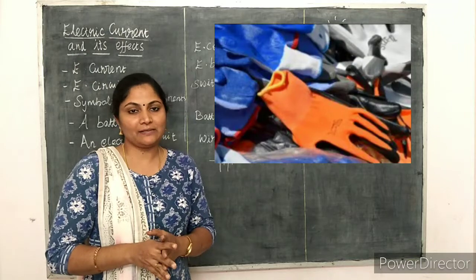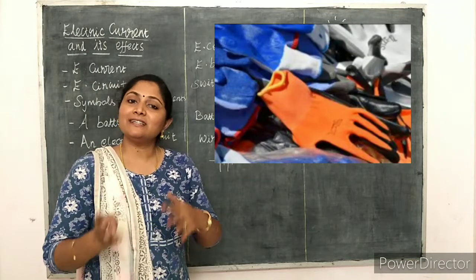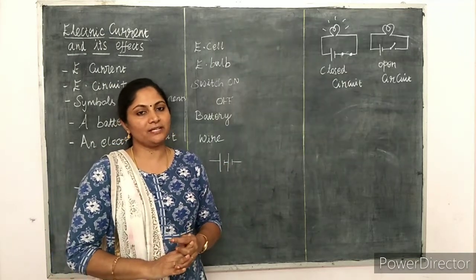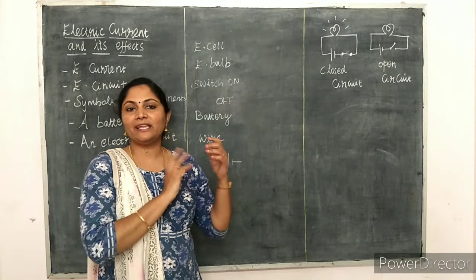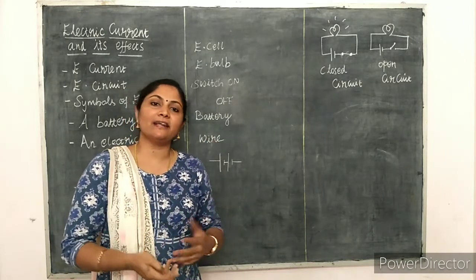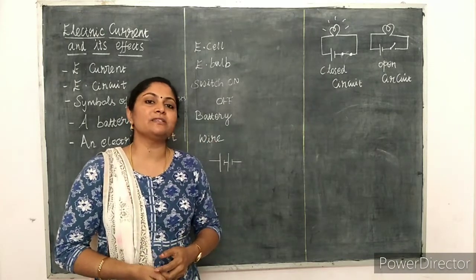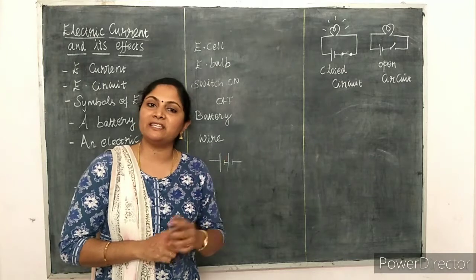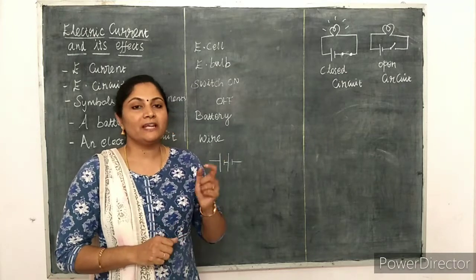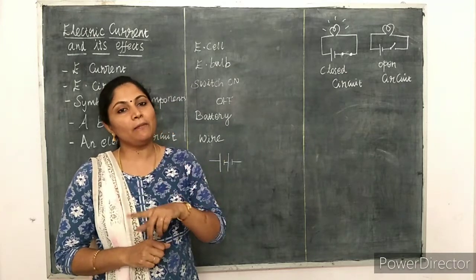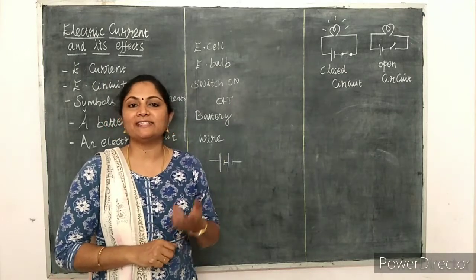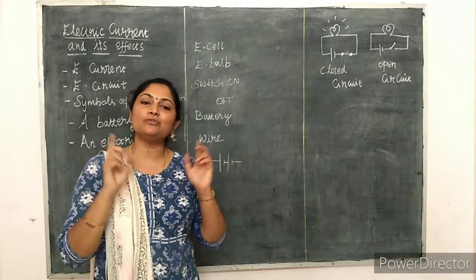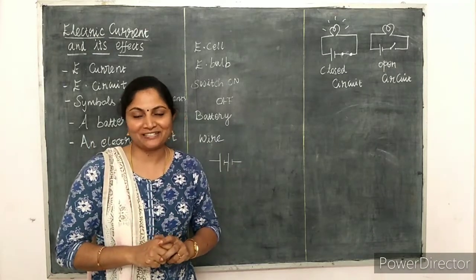An insulator is a material which does not allow the electric current to pass through it. In electric circuits, we are going to discuss about only conducting materials — especially copper and aluminium, which are used as conducting materials in our household electric circuits.